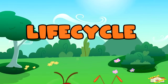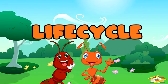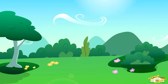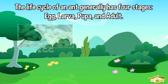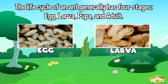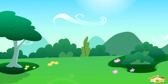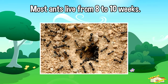Now let's talk about the life cycle. The life cycle of an ant generally has four stages: egg, larva, pupa, and adult. Most ants live from eight to ten weeks.